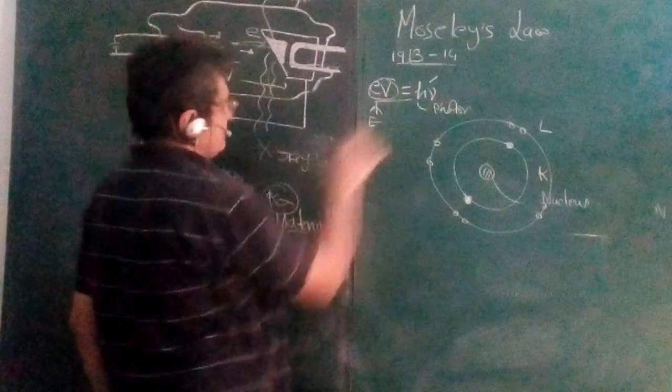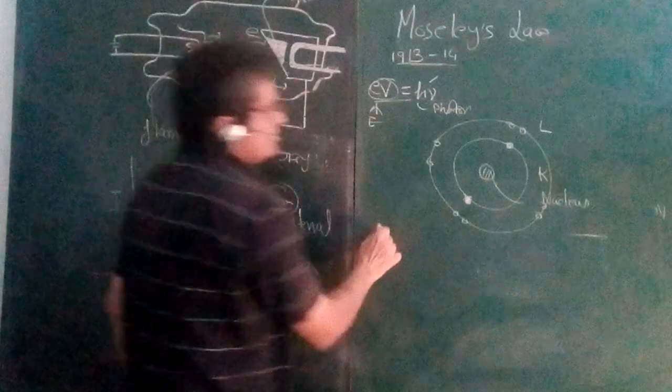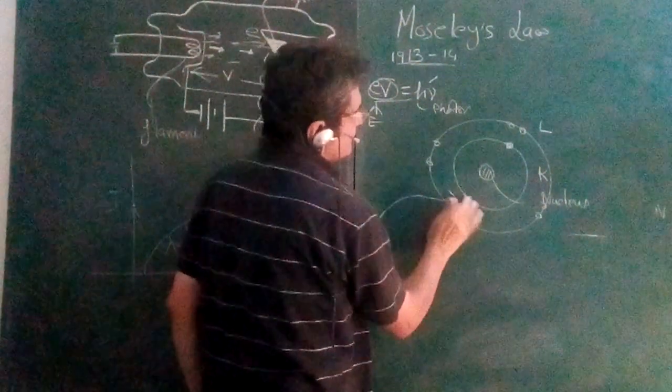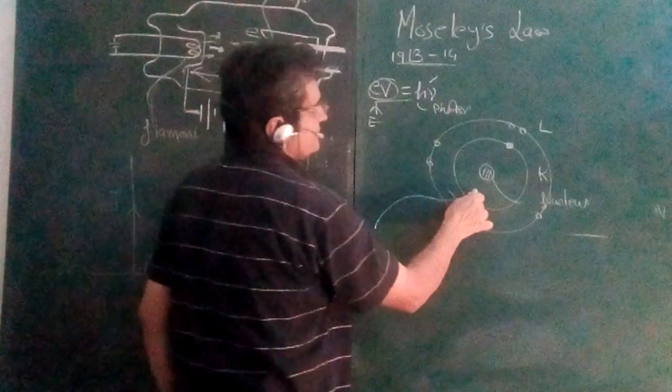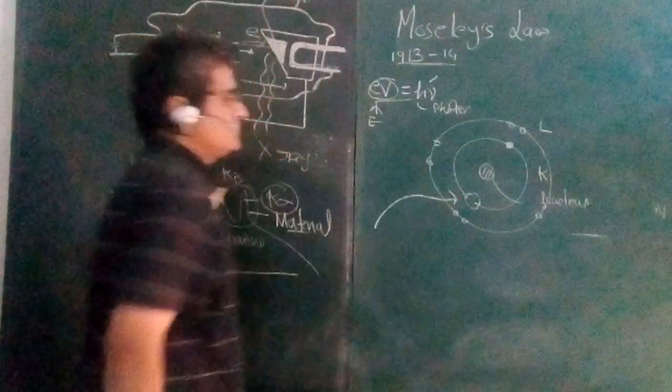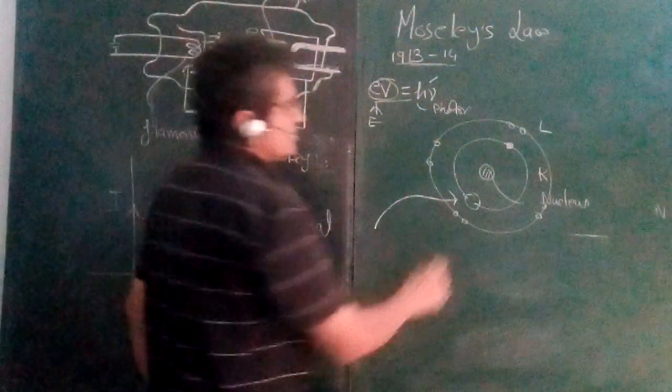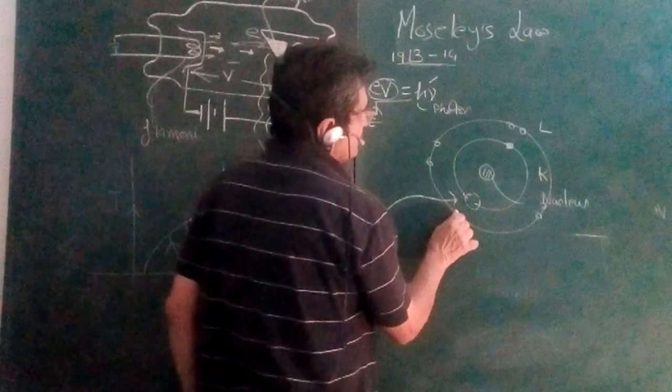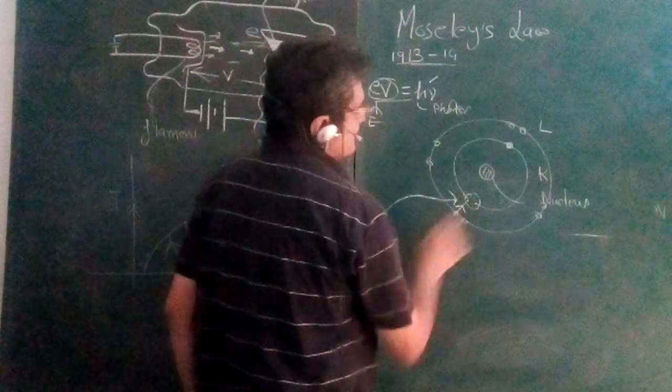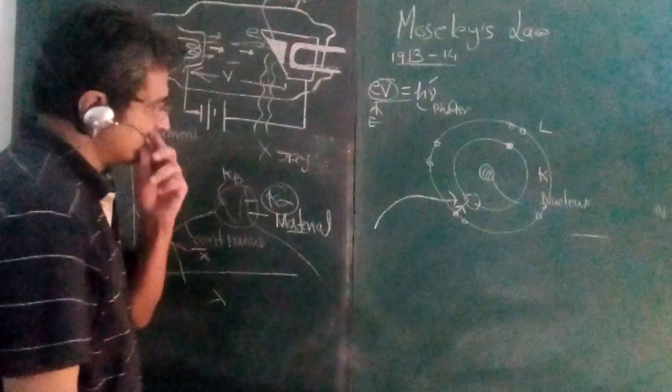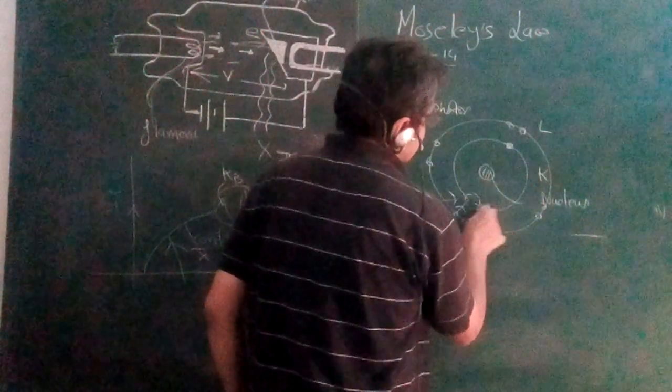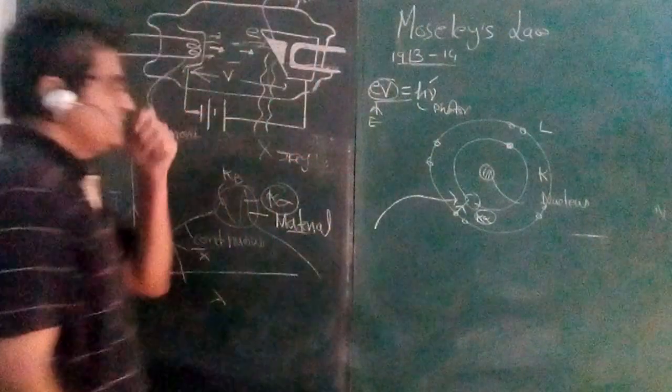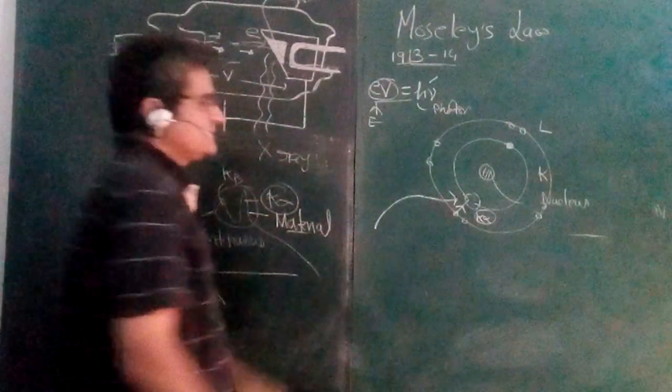Now when you have a different kind of X-ray - this was continuous, now I'm coming to this characteristic. When an electron strikes off, one of the incoming electrons strikes off this electron in the K shell and a vacancy is created. But this vacancy is filled by the electron from the L shell and you have K alpha lines. Moseley studied these K alpha lines.